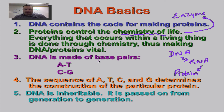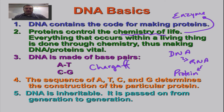Now remember DNA is made out of base pairs, and remember our Chargaff's rules. Chargaff's rules — always together, good couple: A to T, C to G. It's the sequence of A's and T's and C's and G's that will determine the sequence of amino acids in a protein.